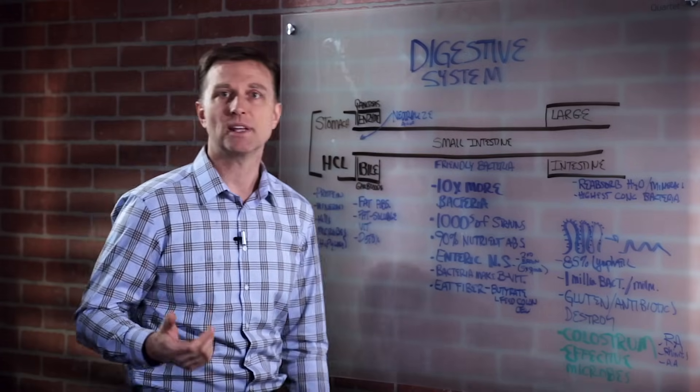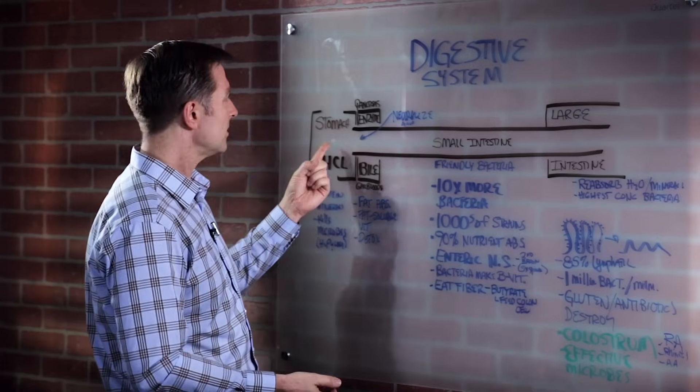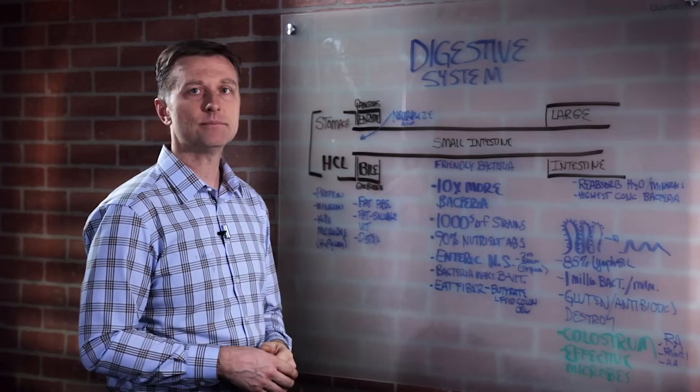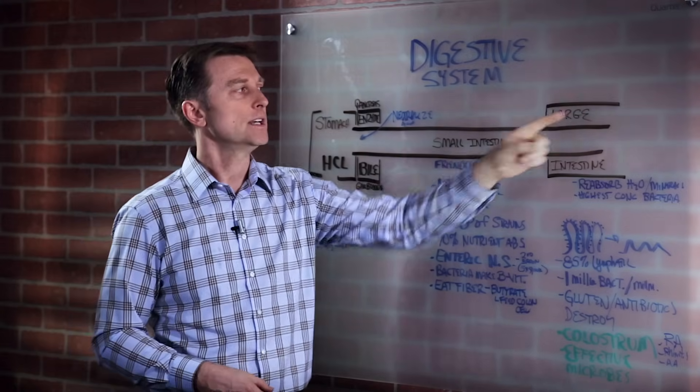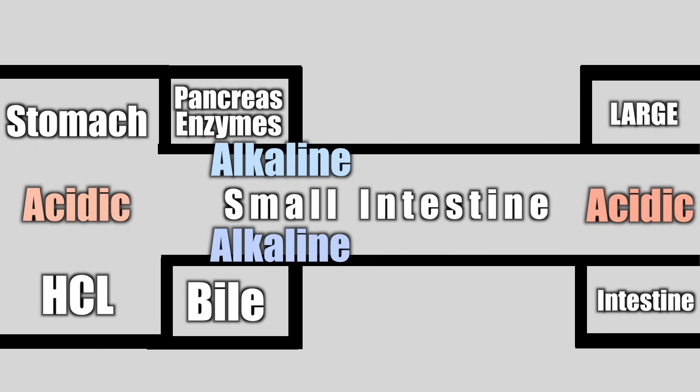So the small intestine is alkaline. And it's so funny when people say, well, you need to be alkaline. Well, what part of the body are you talking about? Because your stomach better not be alkaline. Definitely the small intestine should be alkaline. But the large intestine should be acidic. So you have different pHs.